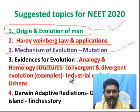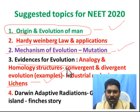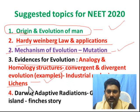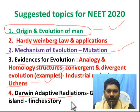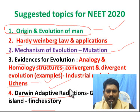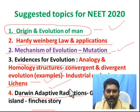Other important topics include: mutation and evidences for evolution, analogy and homology, convergent and divergent evolution with examples, industrial melanism and lichens — lichens are SO₂ pollution indicators. Since 2017 and 2019, industrial melanism and lichens have been recurring questions. Also study Darwin's adaptive radiations — the Galapagos Island finches story. You can get success in NEET 2020. Thank you.